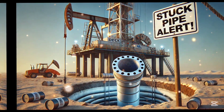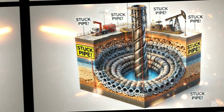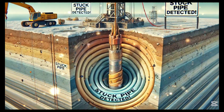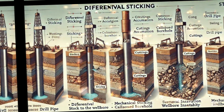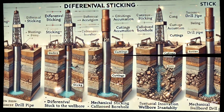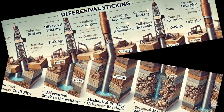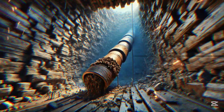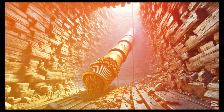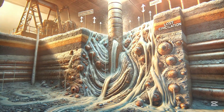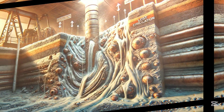What are stuck pipe and lost circulation? A stuck pipe occurs when the drill string cannot move freely up or down in the wellbore. Its types are: number one, differential sticking — pipe adheres to the wellbore due to pressure differences; and number two, mechanical sticking — pipe gets stuck due to cuttings accumulation, collapsed borehole, or wellbore instability.